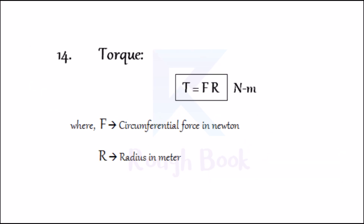Number fourteen: Torque. The measure of causing the rotation of a wheel, or the turning or twisting moment of a force about an axis, is called the torque. It is given by T = F × R in Newton meters, where F is the force and R is the distance or radius in meters.